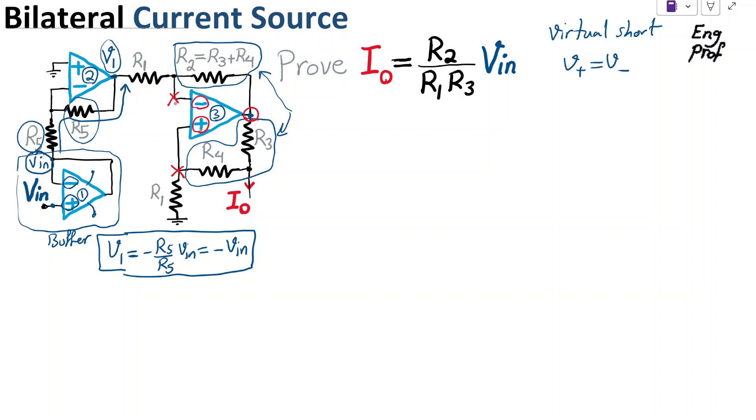So since the positive and negative are supposed to have the same voltage because of virtual short that is supposed to be applicable for op-amp number 3, we can say that VR2, so we can say that VR2 is equal to VR4 plus VR3.